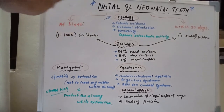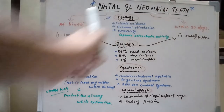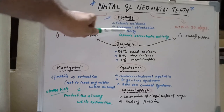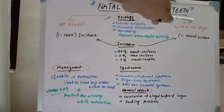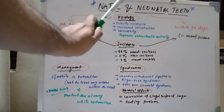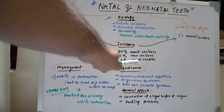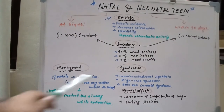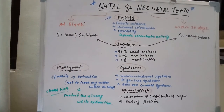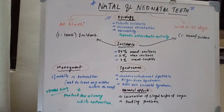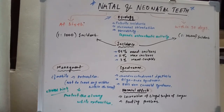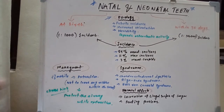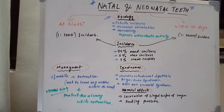To recap: natal teeth are seen at birth, neonatal teeth within 30 days. Etiology includes febrile incidence, hormonal stimulation, hereditary factors, and osteoclastic activity. Incidence is 1 in 1,000 for natal and 1 in 30,000 for neonatal teeth. Most commonly seen in mandibular incisors, then maxillary incisors, then mandibular cuspids. Associated syndromes are Chondro-Ectodermal Dysplasia, Riga-Fede Syndrome, and Ellis-van Creveld Syndrome. Harmful effects are laceration of the ventral tongue and feeding problems. Management includes extraction if there is significant interruption, with airway protection at all times.